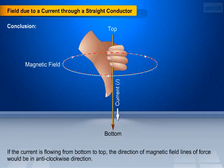The second is: if the current is flowing from bottom to top, the direction of magnetic field lines of force would be in anticlockwise direction.